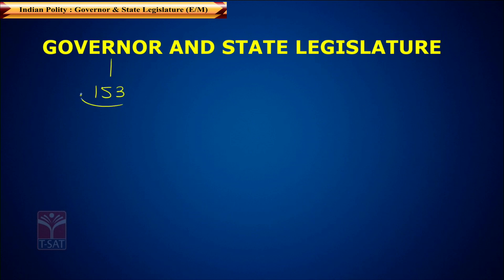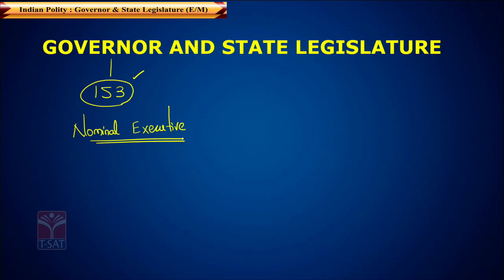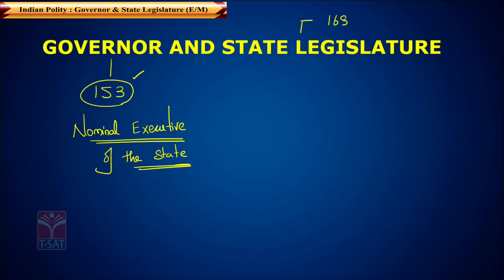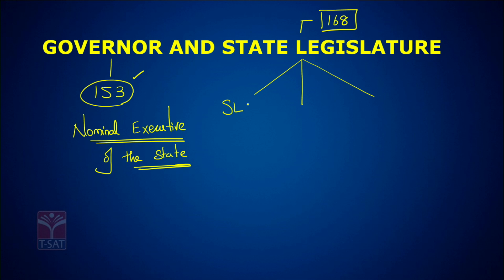Article 153 says there shall be a Governor for each state, and this Governor is the nominal executive of the state. State Legislature is defined under Article 168 of the constitution as consisting of three things: the State Legislative Council, the Governor, and the State Legislative Assembly.